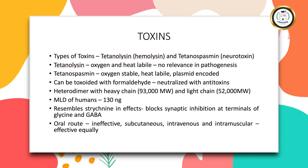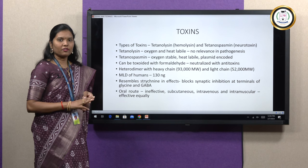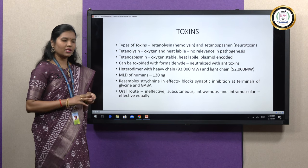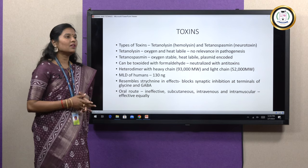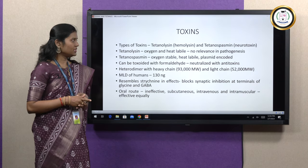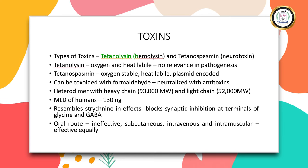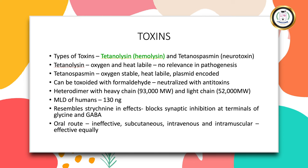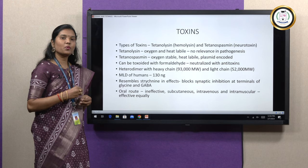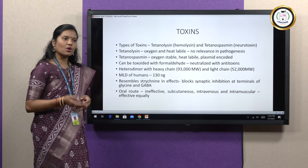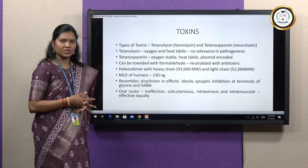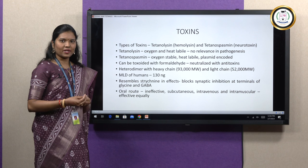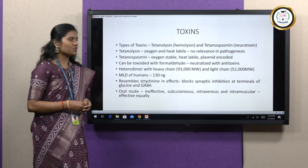The toxins: Tetanus produces actually three powerful toxins, but two toxins are generally explained and not the third one. The first toxin is called tetanolysin, which is a hemolysin, and the next toxin is called tetanospasmin, which is a potent neurotoxin. The third toxin is also a neurotoxin, but it has no relevance in pathogenesis and so it is left unexplained.